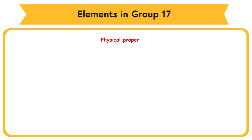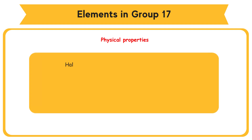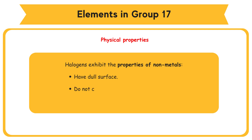Halogens exhibit the properties of non-metals as follows: 1. Have a dull surface. 2. Do not conduct electricity in all states. 3. Have low melting and boiling points.